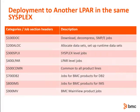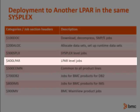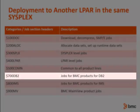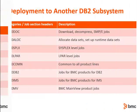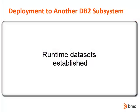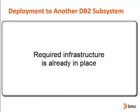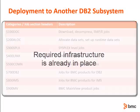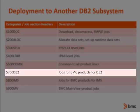If I am going to deploy the products to another LPAR but in the same sysplex using the same runtime libraries, I should start with the $400 series jobs on the subsequent LPAR and continue through the remaining series of jobs. In this scenario, I would have already deployed the products on this LPAR, and now I want to deploy the products to another DB2 subsystem on the same LPAR. That means I already have the runtime datasets established and any infrastructure required by the product is already in place.